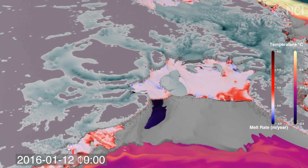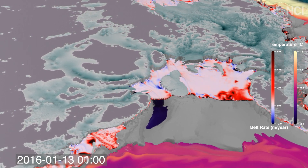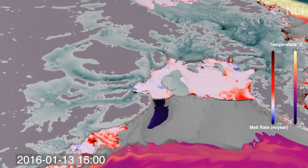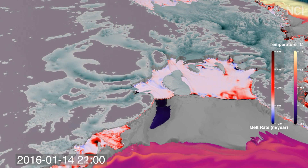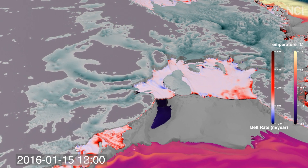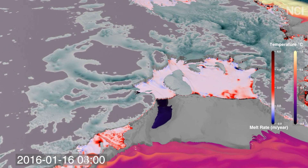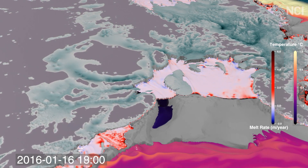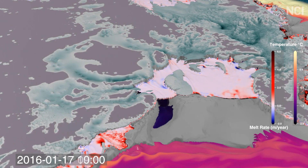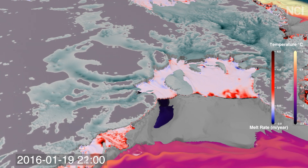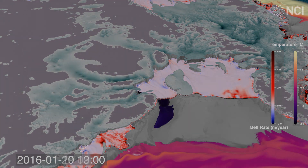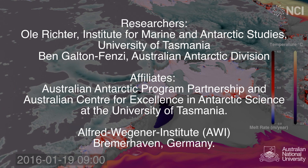Interactions between the Southern Ocean and the Antarctic ice sheet impact global sea levels and climate. Realistic simulations like this can help us to better understand the involved processes and improve predictions of future change.